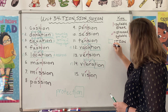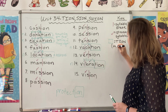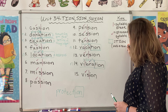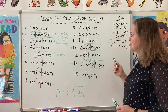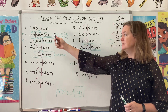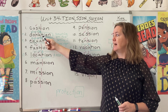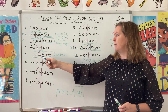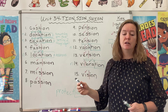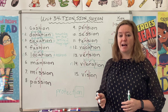We use the T-I-O-N spelling when we're taking a verb and changing it to a noun. All of the verbs on our list ended with a silent E — donate, equate, locate, vacate, and vibrate — so we had to drop the E before we added I-O-N.